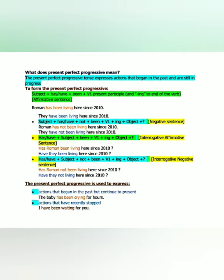For interrogative affirmative sentences: Has/have + subject + been + V1 + ING + object + question mark. So 'Has Roman been living here since 2010?' and 'Have they been living here since 2010?' For interrogative negative sentences: Has/have + subject + not + been + V1 + ING + object + question mark. So 'Has Roman not been living here since 2010?' and 'Have they not been living here since 2010?'